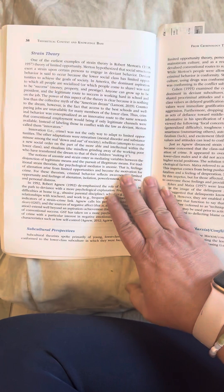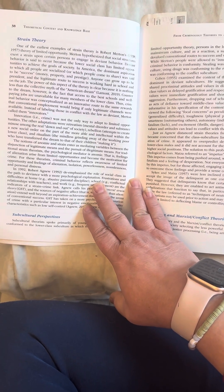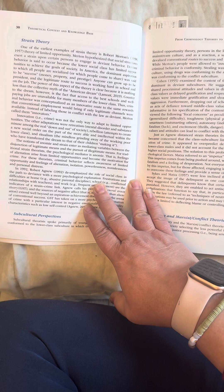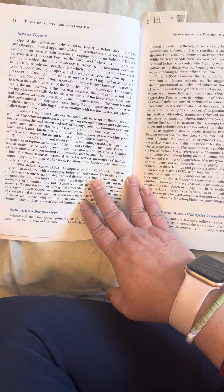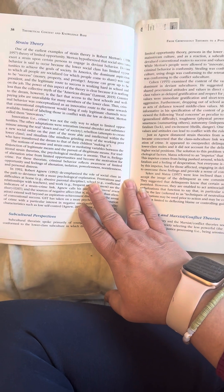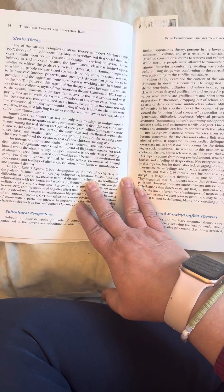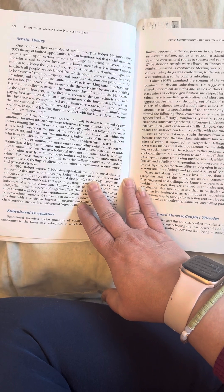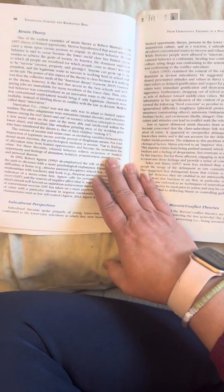One of the earliest examples of strain theory is Robert Merton's 1938-57 theory of limited opportunity. Merton hypothesized that social structures exert a strain upon certain persons to engage in deviant behavior. Deviant behavior is said to occur because the lower social class has limited opportunities to achieve the goals of society. In America, the dominant aspiration to which all people are socialized or which people come to share is said to be success, money, property, and prestige. Anyone can grow up to be a president, and the legitimate route to success is working hard in school and on the job. The power of this aspect of the theory is clear because it is nothing less than the collective myth of the American dream. Counter to the dream, however, is the fact that access to the best schools and well-paying jobs are unavailable for many members of the lower class.